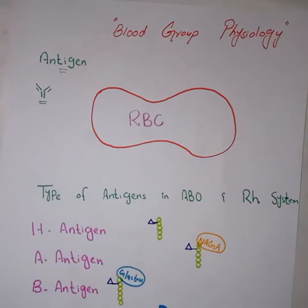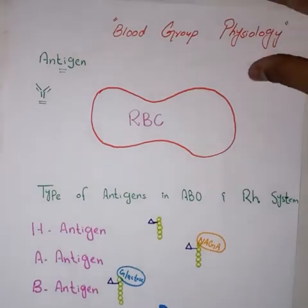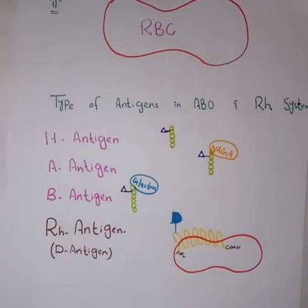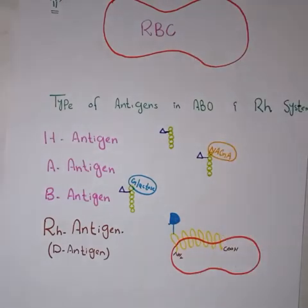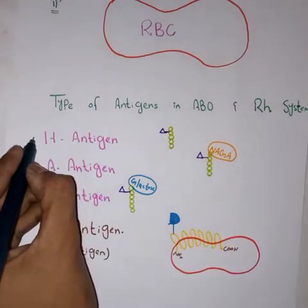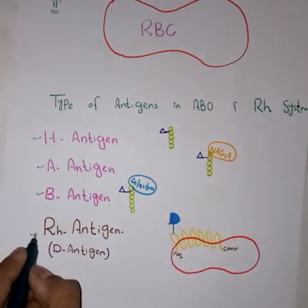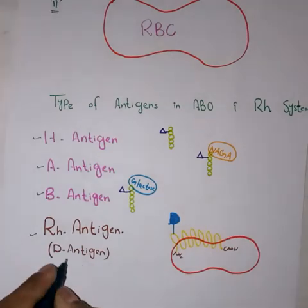On the RBC — red blood cells — different types of antigens are present which determine the specific type of blood group. To understand the type of blood group and the role of antigen, let me give you a brief introduction of all types of antigens. There are basically four major types of antigens present on our red blood cells: H antigen, A antigen, B antigen, and RH antigen or D antigen. I will talk more about these antigens in the later part of the video.